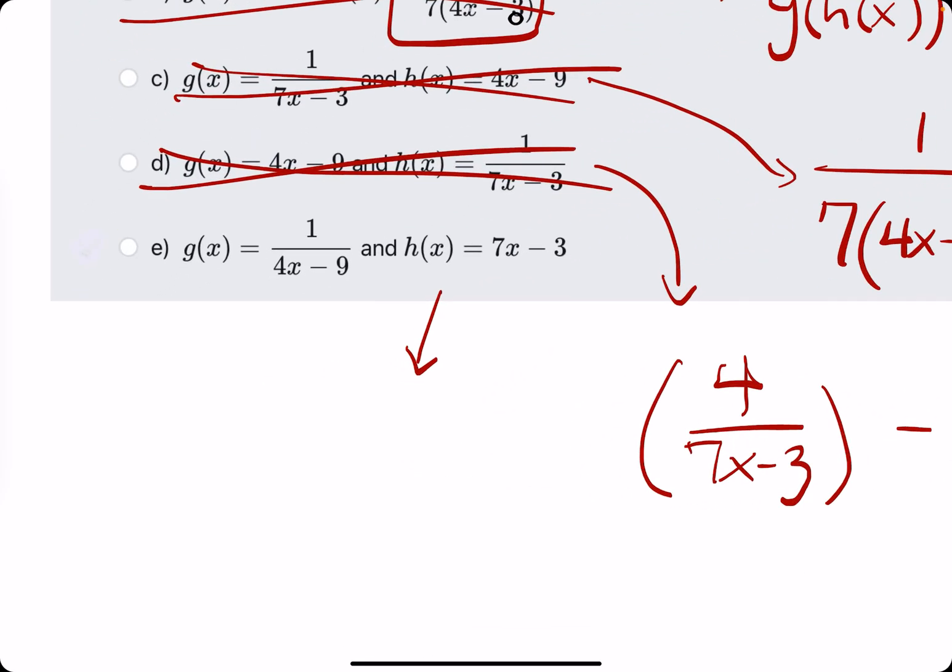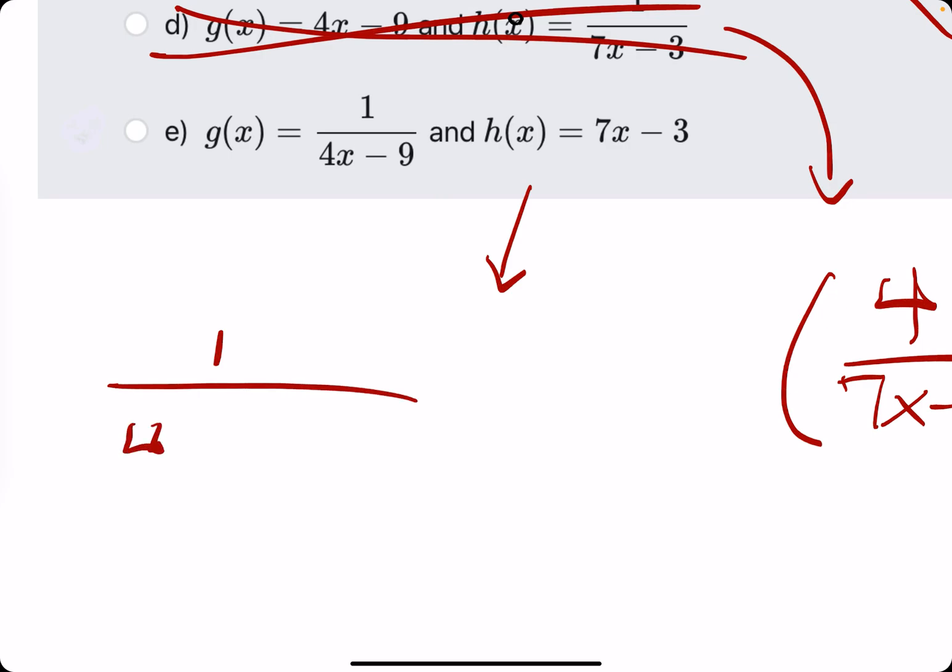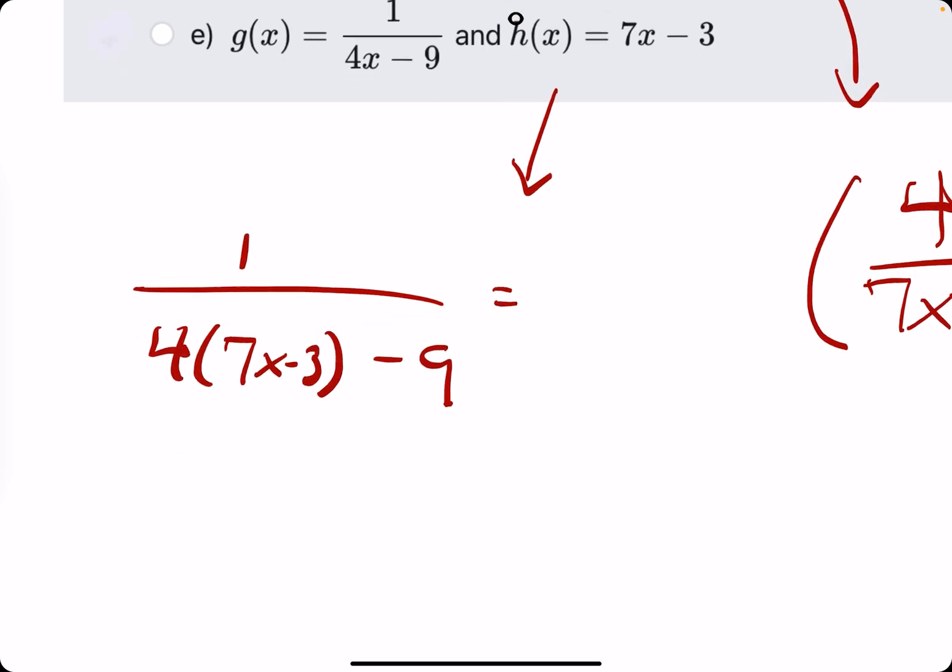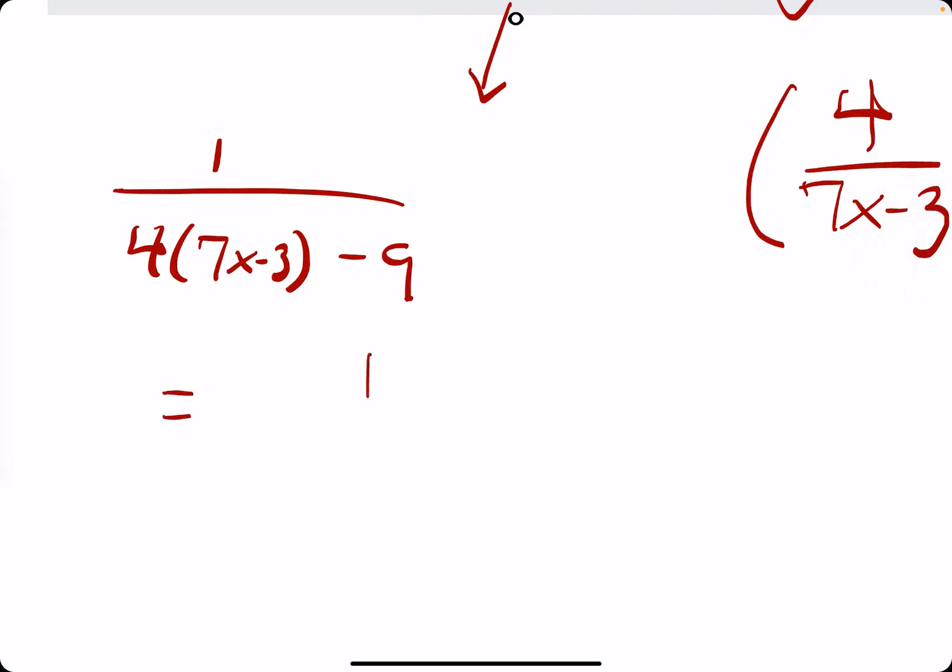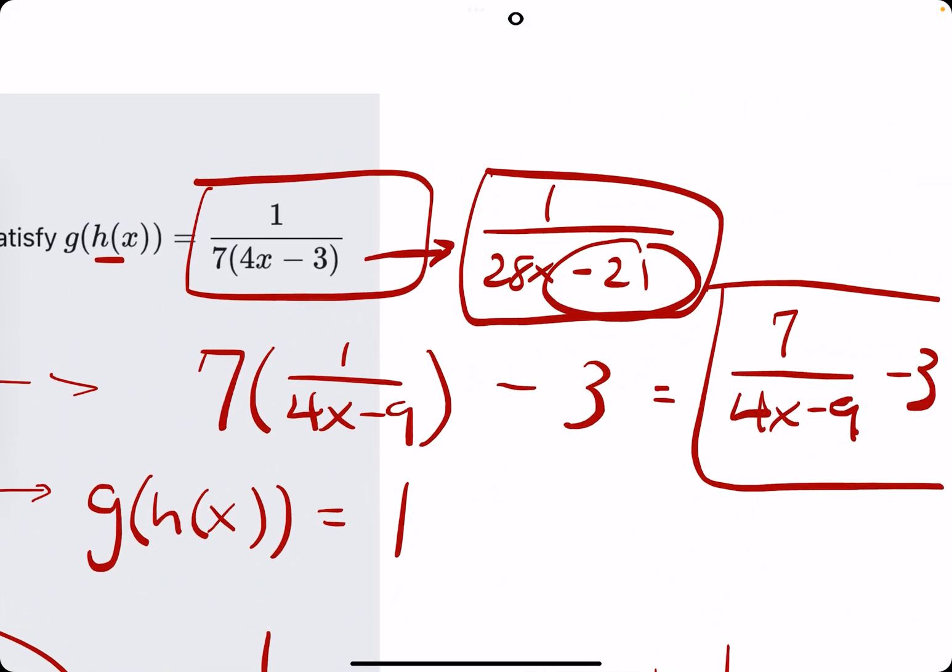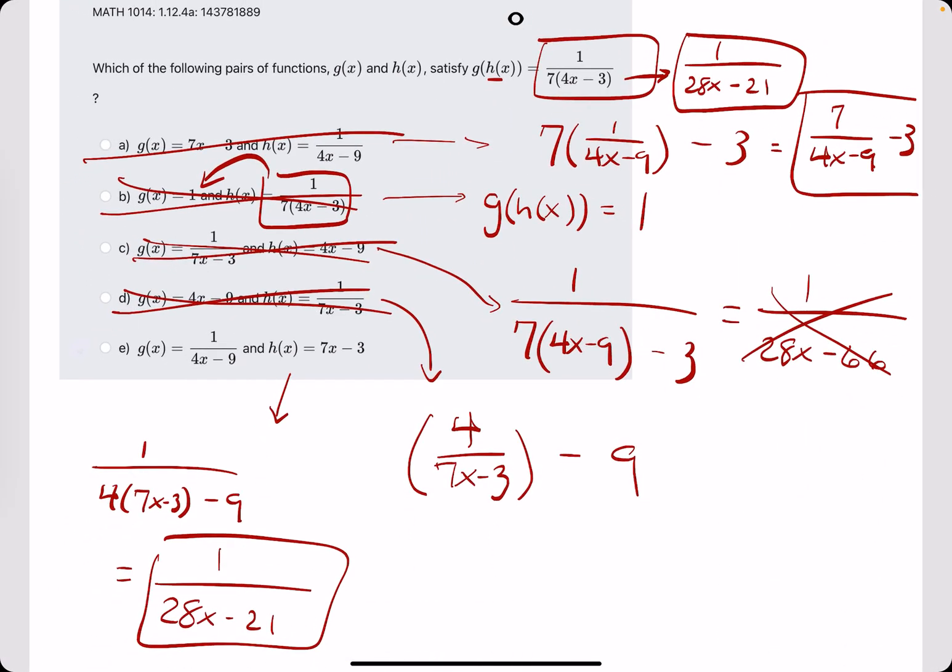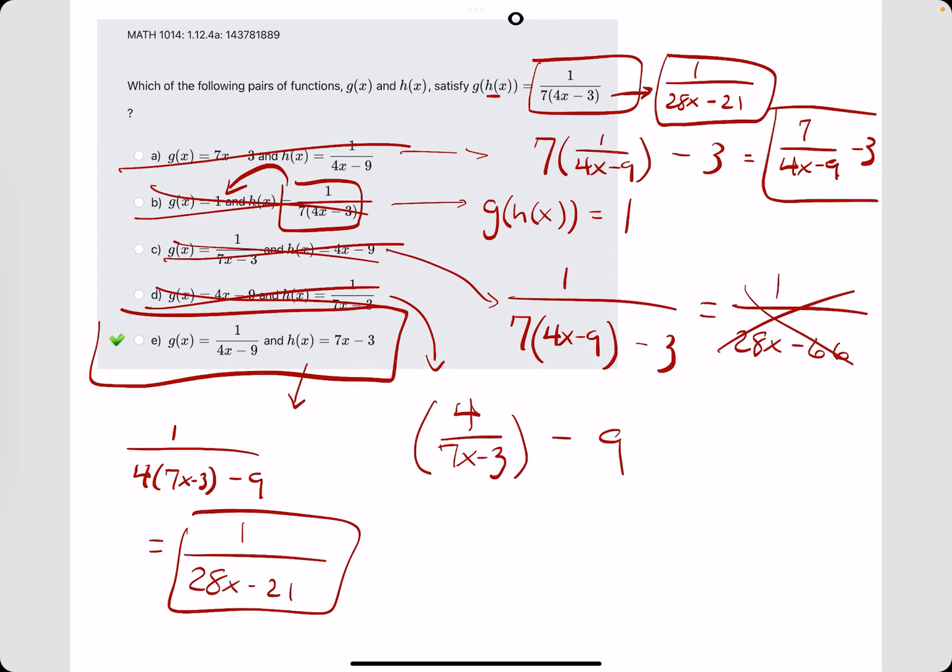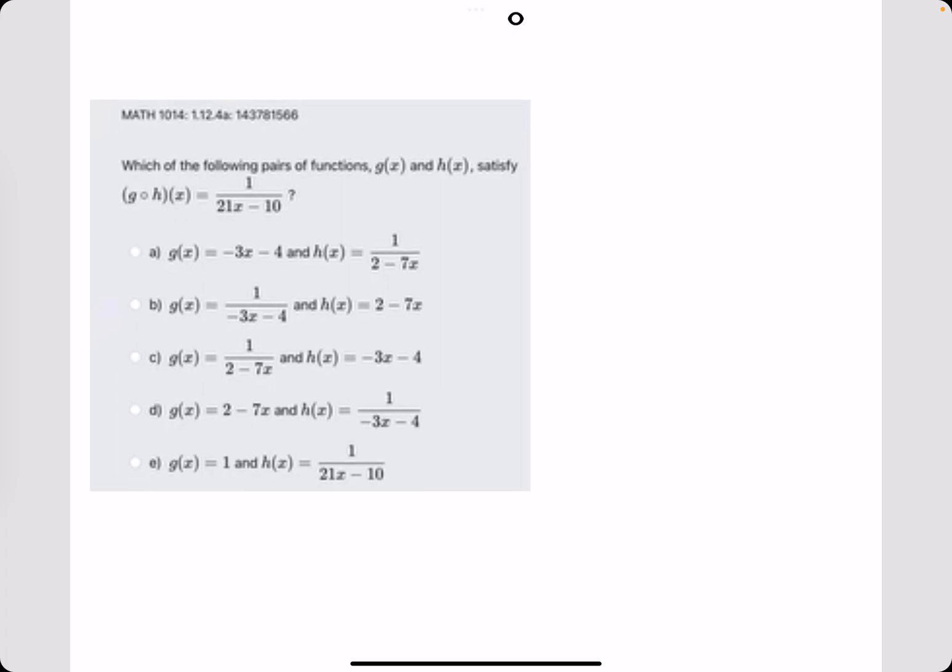Let's work it out. Plugging in h into the function g. 7x minus 3. Again, if we expand the denominator, we get 1 over 28x minus 12 minus 9. Minus 12 minus 9 gives us minus 21. And this ends up matching the original one we had up here. 1 over 28x minus 21. So that's kind of a doozy. I don't know if this is a hard version of this problem, but there's an example. Let's see if we can do two more a little bit quicker.